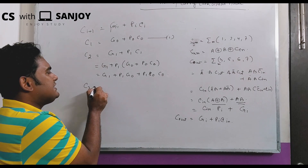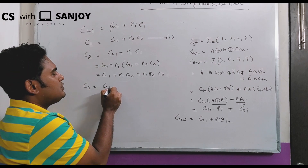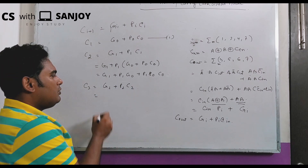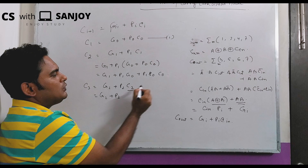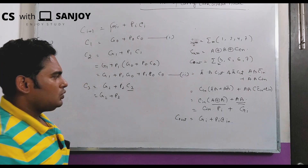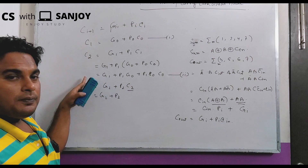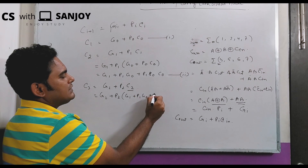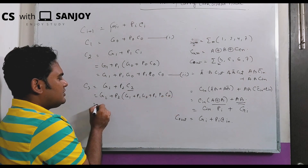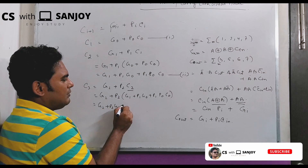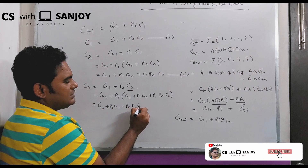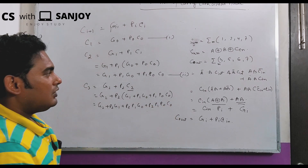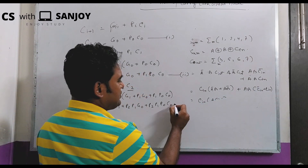For C3 = G2 + P2·C2, substituting equation 2 for C2: C3 = G2 + P2·G1 + P2·P1·G0 + P2·P1·P0·C0. This is equation 3. Notice that when generating C2, we only need C0. Similarly when generating C3, we again only need C0 — so C1, C2, and C3 can all be generated simultaneously.